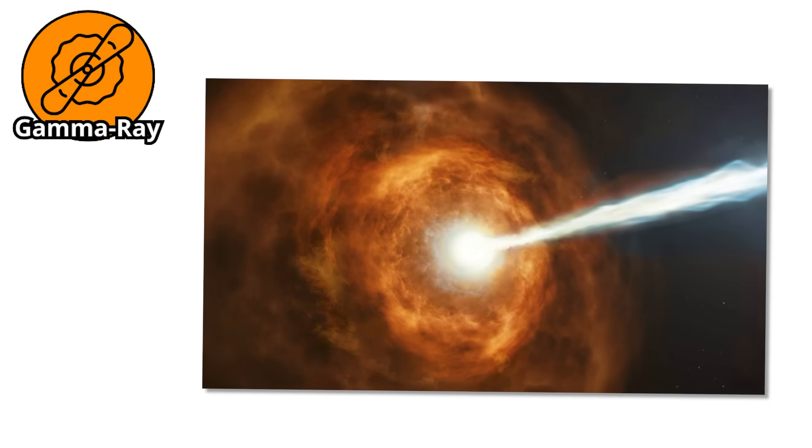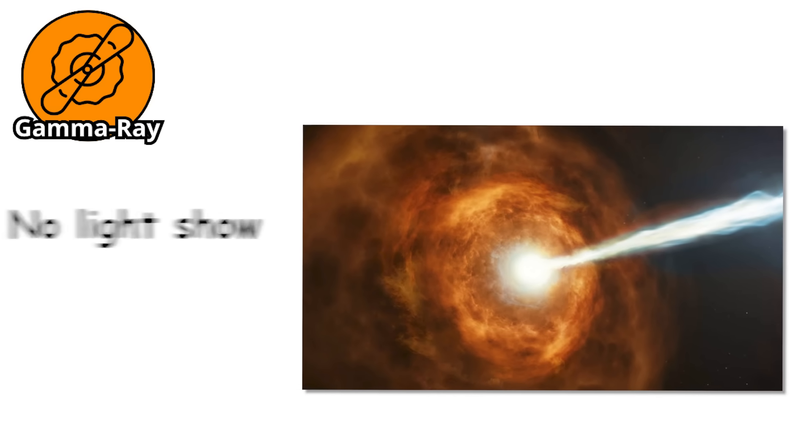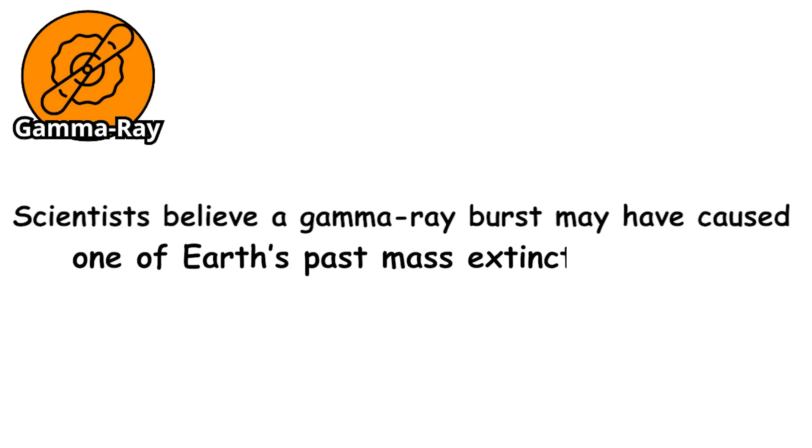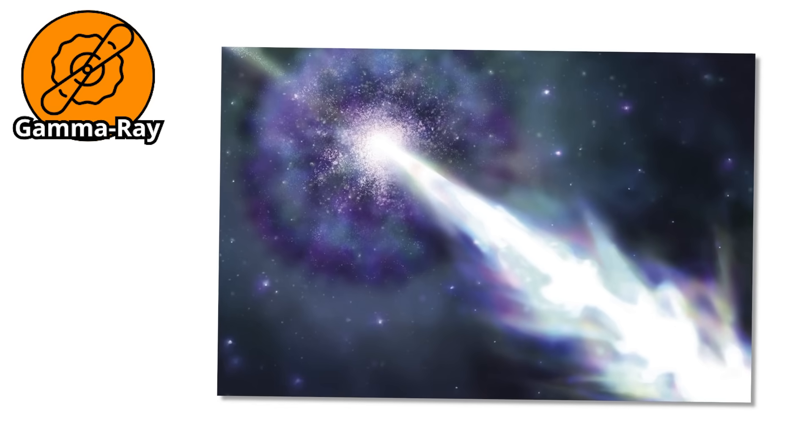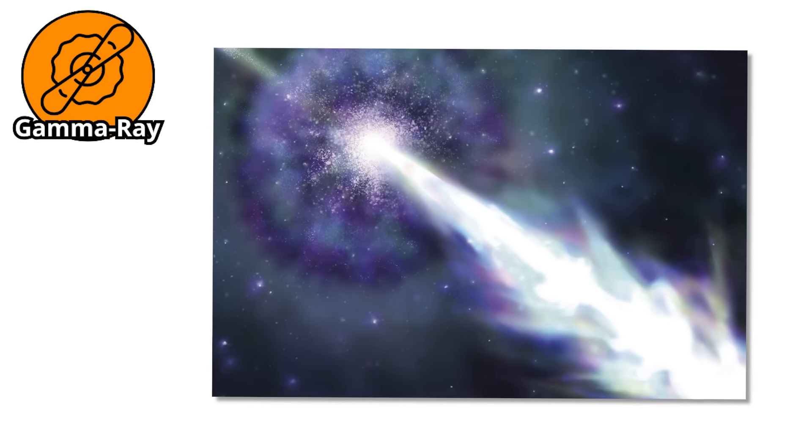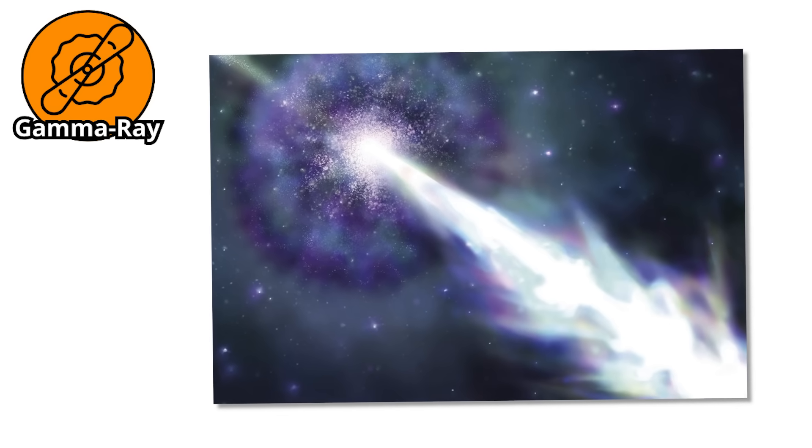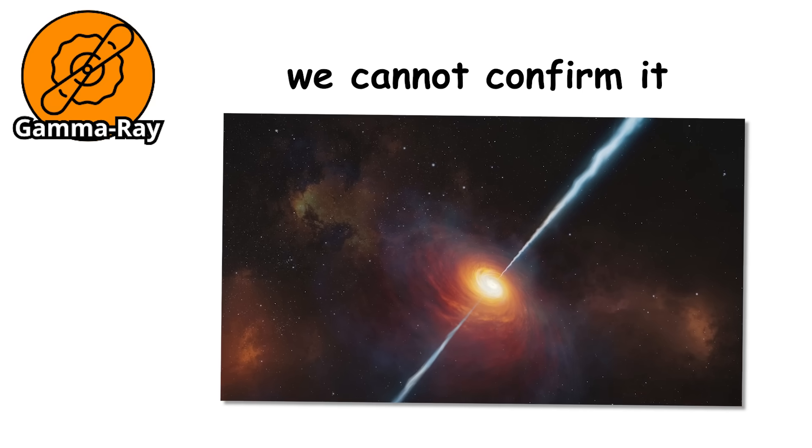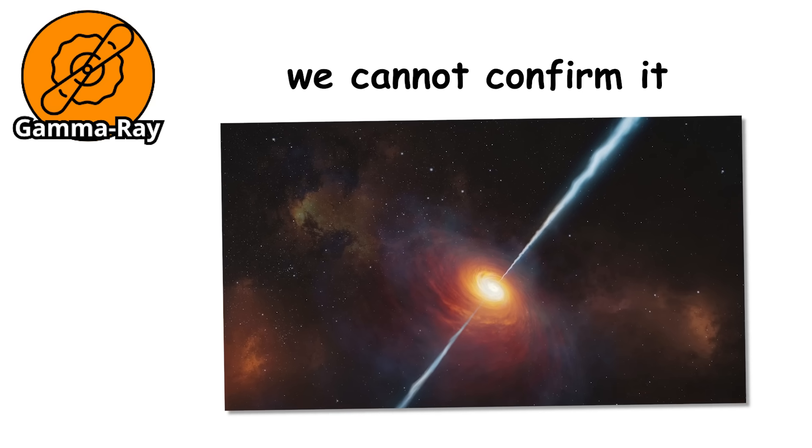These beams are focused and fast and they arrive without warning. No light show, no sound, just instant devastation. Scientists believe a Gamma Ray Burst may have caused one of Earth's past mass extinction events. The evidence points to a time when the ozone layer thinned dramatically and sunlight became deadly. While we cannot confirm it with absolute certainty, it is a chilling possibility that reminds us how vulnerable we really are.